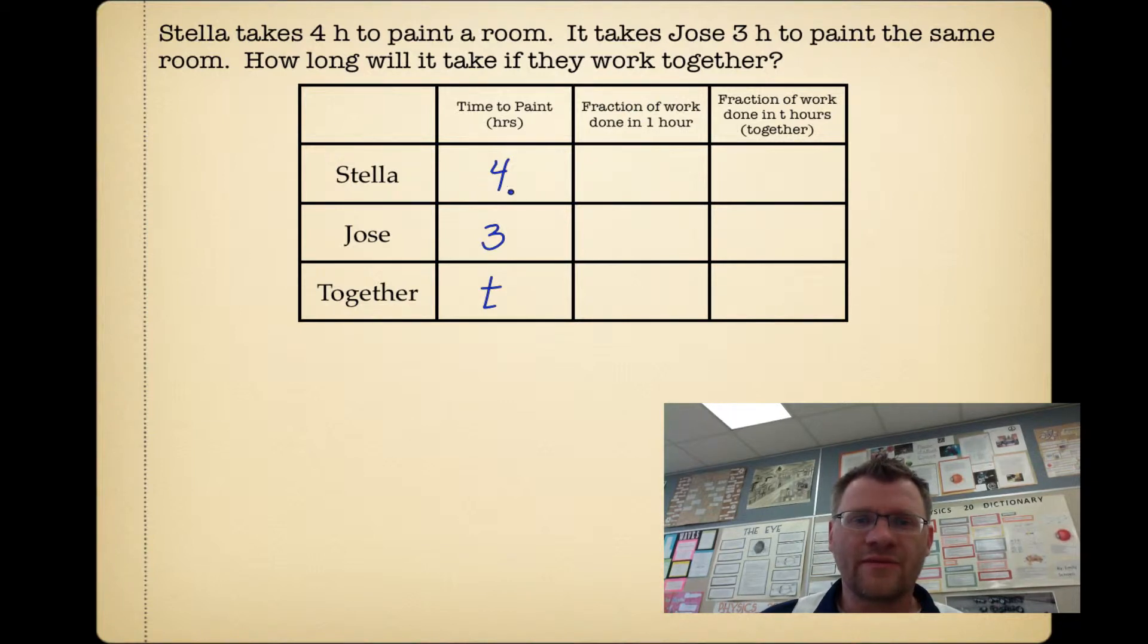If Stella takes 4 hours to paint the room, then the fraction of the work done in 1 hour is going to be a quarter. She gets a quarter of the room painted in 1 hour. Jose would get a third of the room painted in 1 hour. Together, they would get 1/t painted in 1 hour. The fraction of the work done in t hours is going to be 1/4 times t, 1/3 times t, and 1/t times t, which is just 1. So that means the fraction of the work done together, 1/4(t) + 1/3(t), now equals 1. We now have a rational equation.